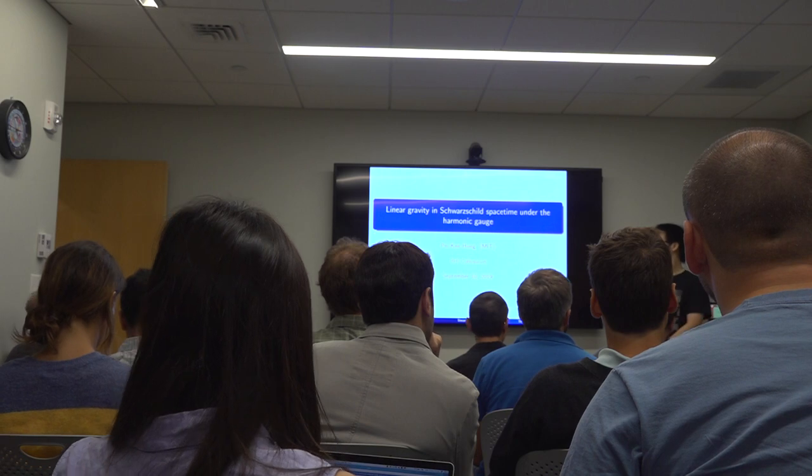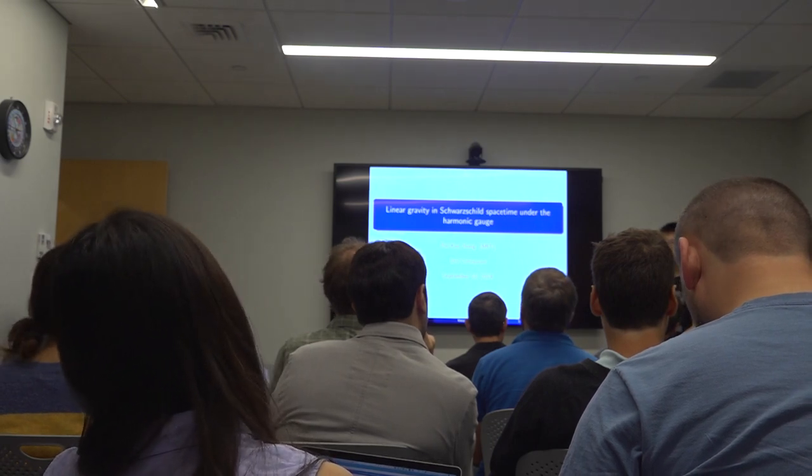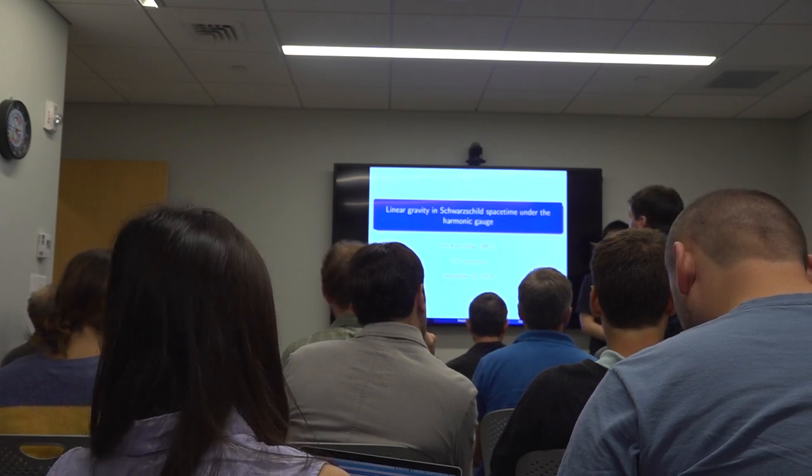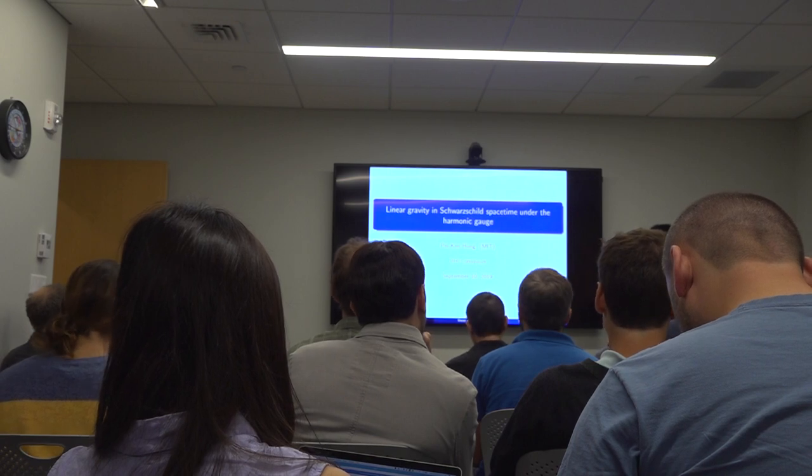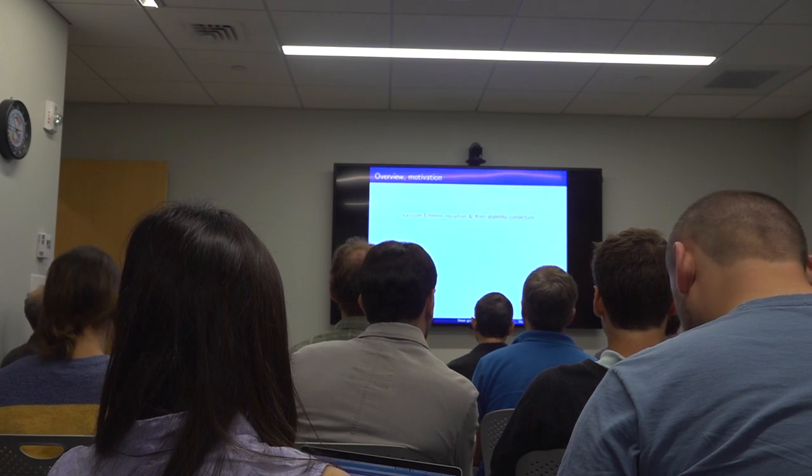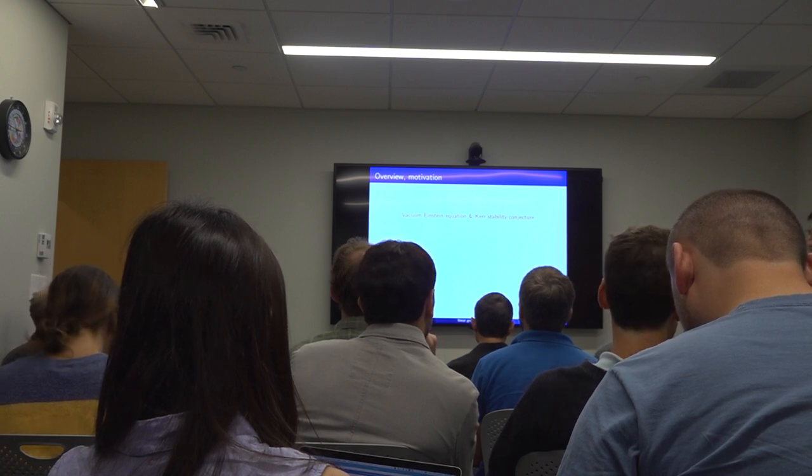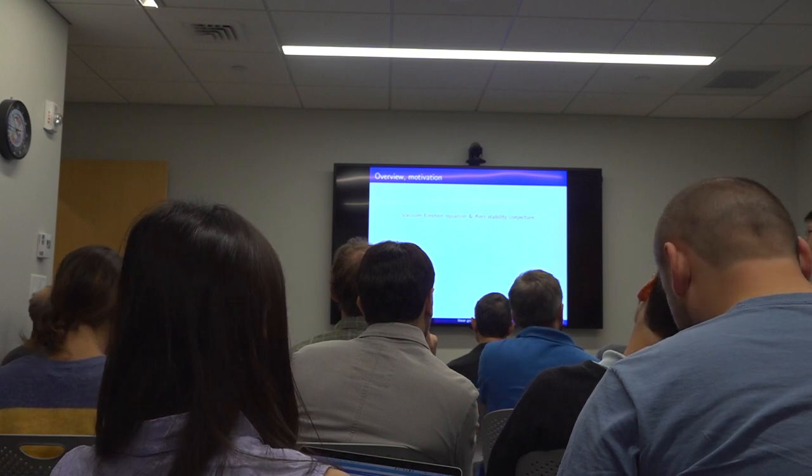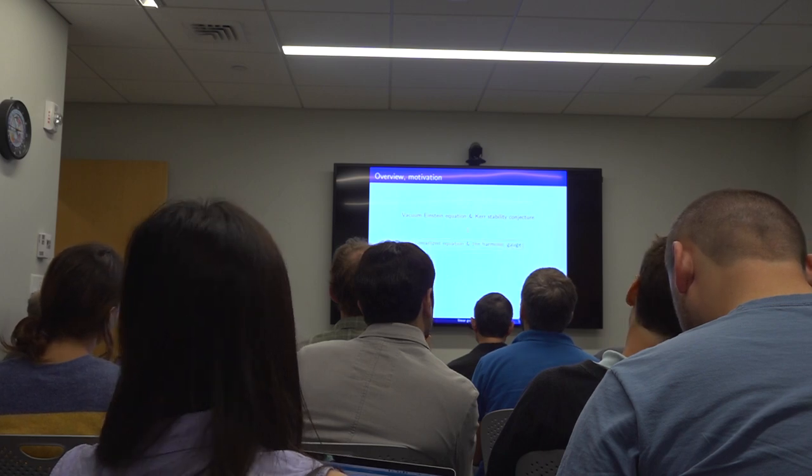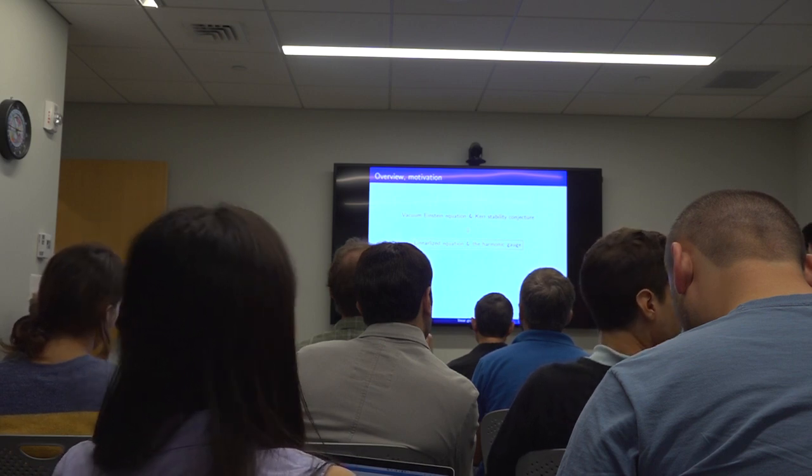Okay. And our first speaker is Pei-Khan Hung. He's a CLE Moore instructor at MIT. And he'll be speaking about linear stability of Schwarzschild space-time in harmonic gauge. Okay. Thanks for the introduction. And thank the organizers for the invitation. It's a great pleasure to speak at BHI. And this is my title, Linear Gravity in Schwarzschild under the harmonic gauge. The main motivation and the ultimate goal is to study the Kerr stability conjecture, which is about the long-time behavior of vacuum Einstein equation, the nonlinear equation, on the metric.